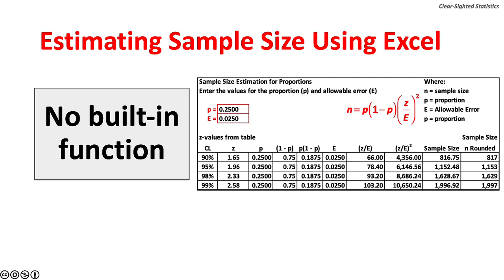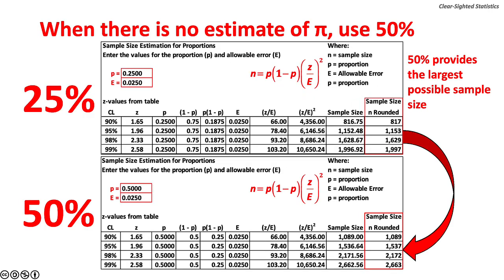Estimating sample size for proportions using Excel. Excel does not have a built-in sample size function for proportions. As you can see from this Excel workbook, it is easy to use Excel to find the necessary sample size at a variety of confidence levels. When there is no estimate for the sample proportion, use 50%, which will give the largest sample possible.